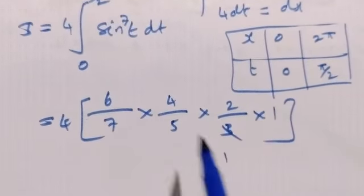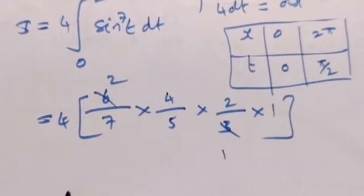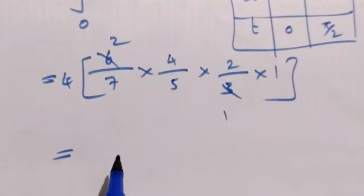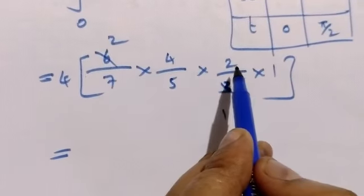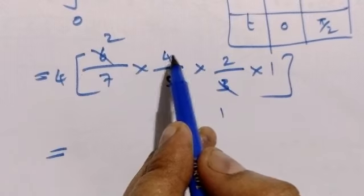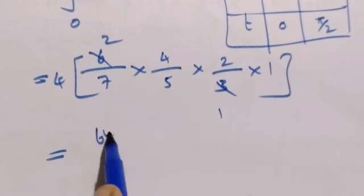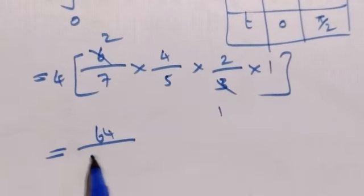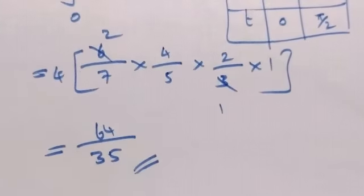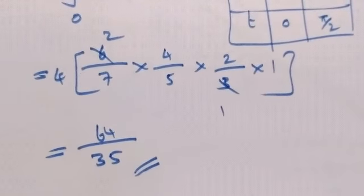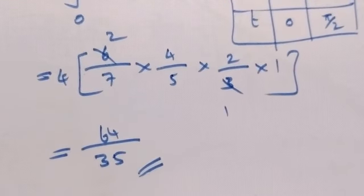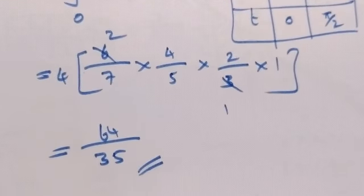For odd numbers, multiply: 6 by 4 by 2 in numerator, 7 by 5 by 3 in denominator. That's 6 times 4 times 2 equals 48 in numerator, times 4 gives 192. Wait, 6 by 7, 4 by 5, 2 by 3 times 4 equals 64 by 35.